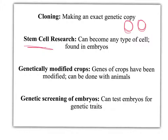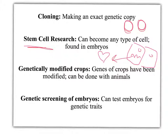Stem cells are particularly important. You find them in embryos, and these are cells that you can take out and they can become any type of cell. For instance, you can turn them into a heart cell or a lung cell, and this can have extreme use in terms of making organ transplants.